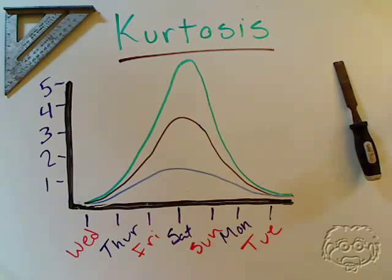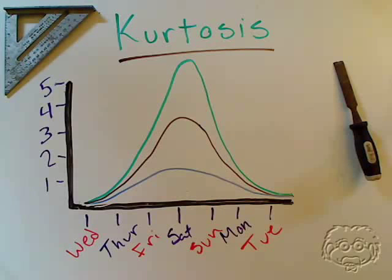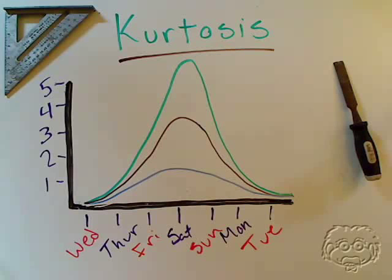Kurtosis is a measure of whether data are peaked or flat, relative, of course, to normal distribution.